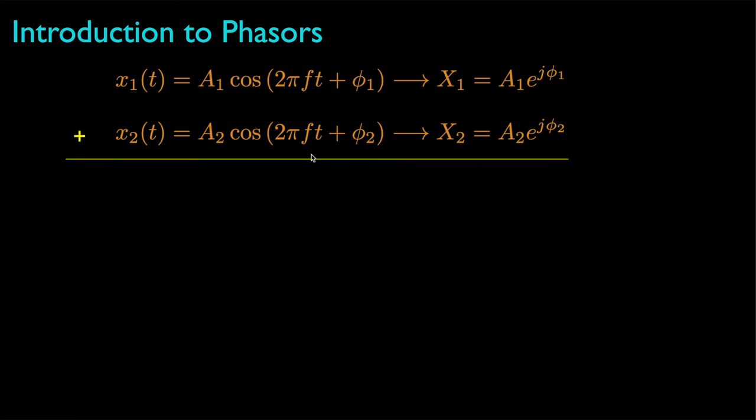Now, let's suppose we want to add the two signals. By using some basic trigonometric relationships, we can show that the resulting phasor is the sum of the two phasors, whose amplitude and phase are the amplitude and phase of the resulting sinusoid.